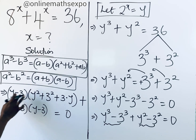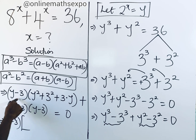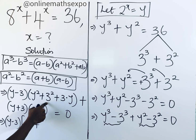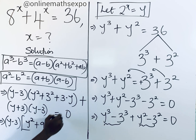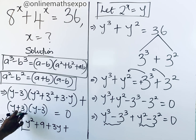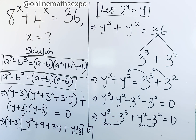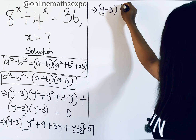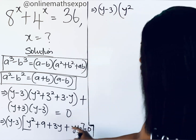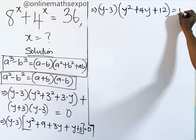We observe that (y minus 3) is a common factor in both groups, so we factor it out. After factoring: (y minus 3) times [(y squared plus 9 plus 3y) plus (y plus 3)] equals 0. Simplifying inside the bracket: 3y plus y gives 4y, and 9 plus 3 gives 12. So we have (y minus 3)(y squared plus 4y plus 12) equals 0.